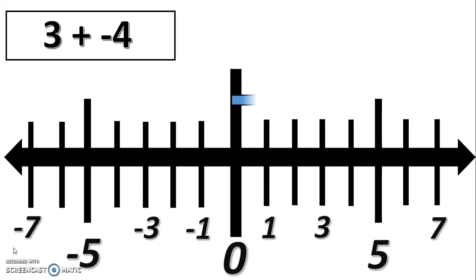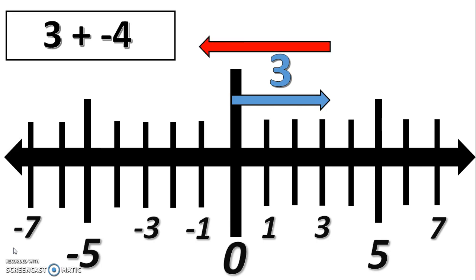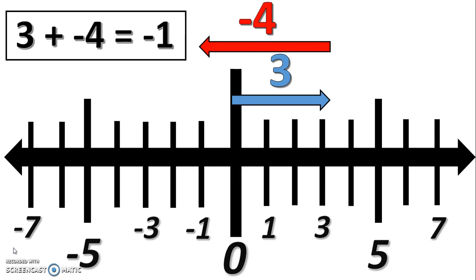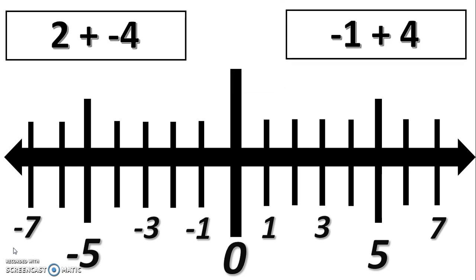We're going to do another one: three plus negative four. We would again move to the right three. And from this positive three, we're going to add a negative four, so we move to the left four spaces from the three. When we do this, we are at negative one. So three plus negative four is negative one. Here are two more problems, both with opposite signs, that you should now model on your own number line to discover the answer.